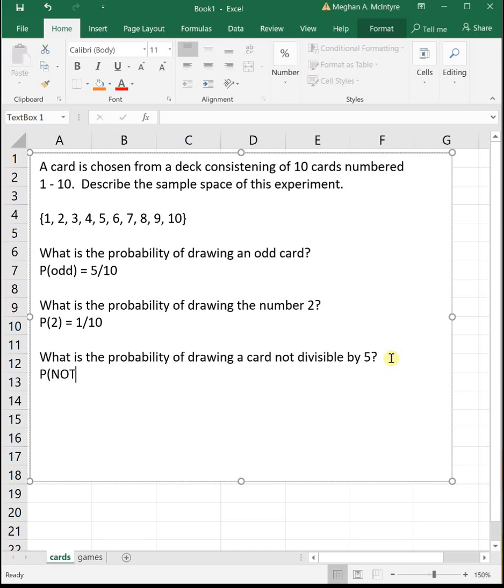So we're trying to find the probability that it's not divisible by 5. And the complement rule tells us that this is equal to 1 minus the probability of the complement, and the complement is just the opposite case. So the opposite of not being divisible by 5 is that something is divisible by 5.